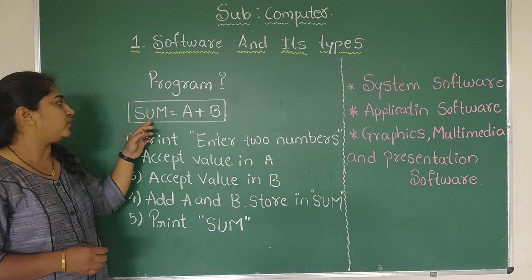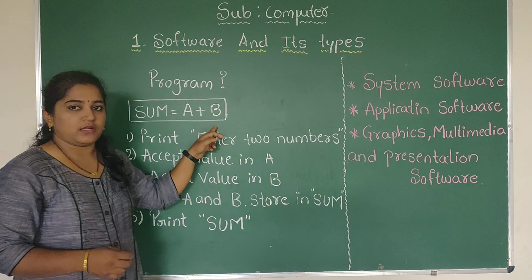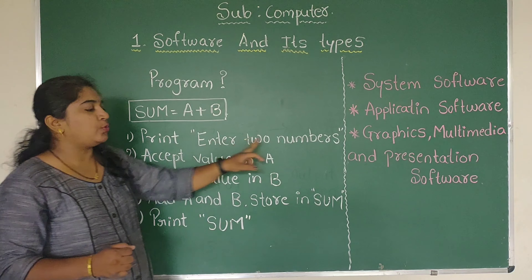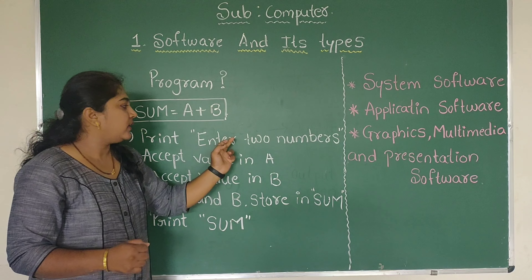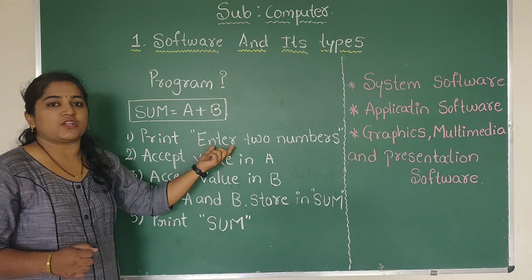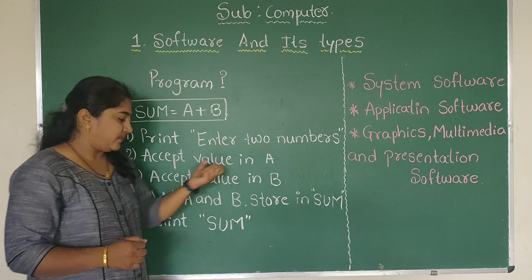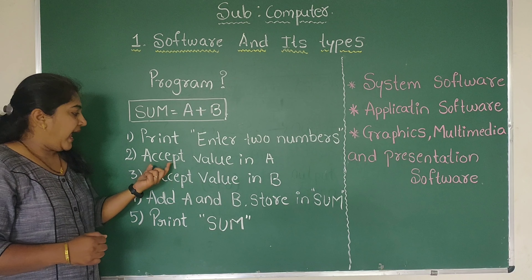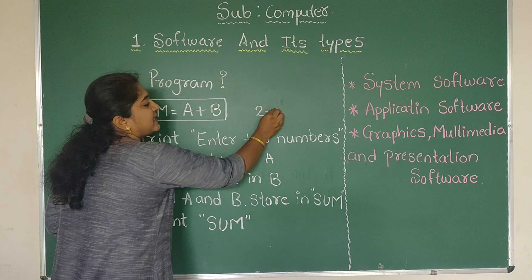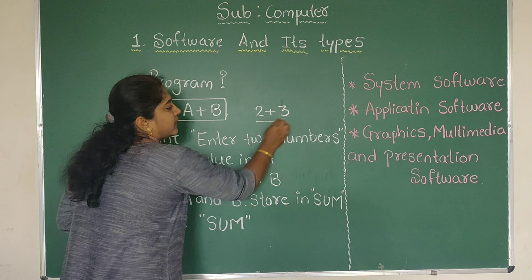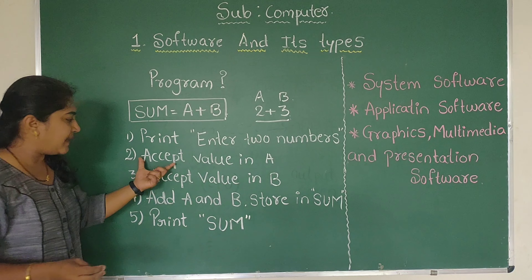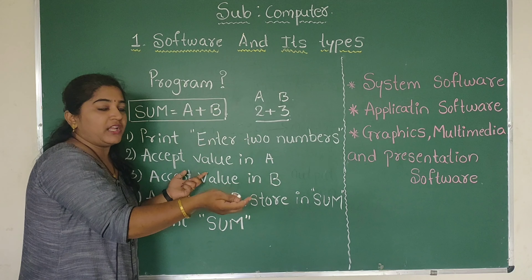As we now know, the computer works on instructions. Going back to the same example — we want to calculate the sum of two numbers. See here: first it will display the sentence on the output screen as 'Enter two numbers.' This means it will display that message. After that it will accept the value in A. We are taking A as 2 and B as 3.